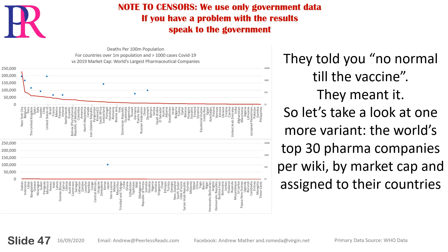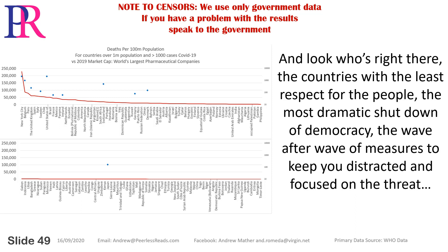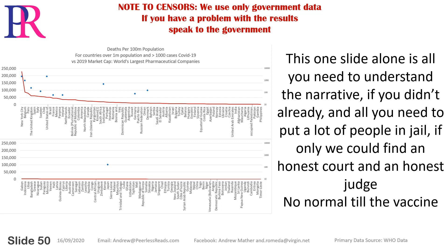Let's take a look at one more variant: the world's top 30 pharma companies, per wiki, by market cap, assigned to their countries. Japan on its own, like we said. Western countries — Denmark, Germany, Switzerland — still in the top quarter of worst hit, but having some respect for their people. And look who's right there: the countries with the least respect for the people, the most dramatic shutdown of democracy, the wave after wave of measures to keep you distracted and focused on the threat. This one slide alone is all you need to understand the narrative — and all you need to do to put a lot of people in jail, if only we could find an honest court and an honest judge.